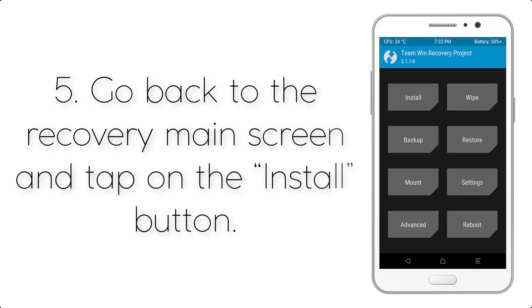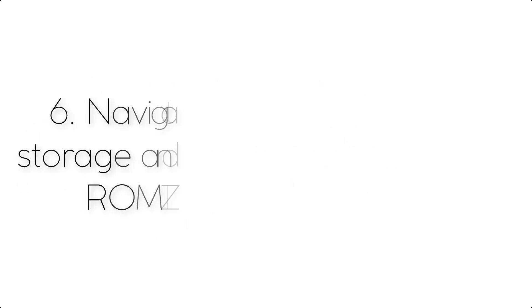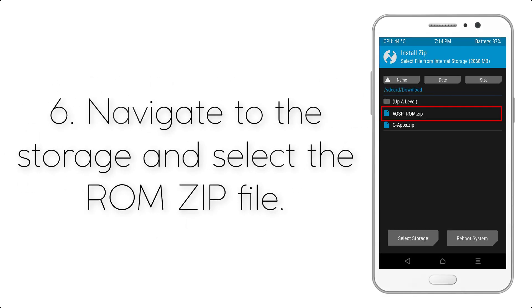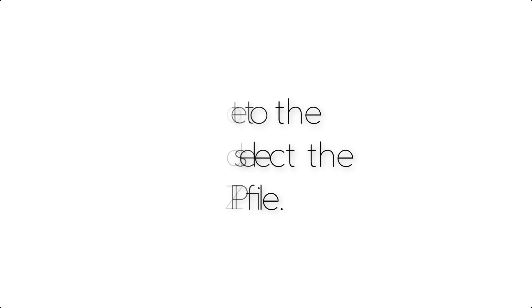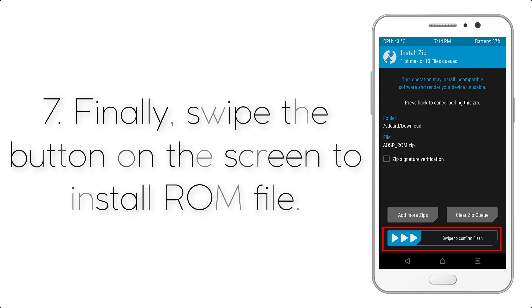Step 4: Swipe the button to wipe the device. Step 5: Go back to the recovery main screen and tap on the Install button. Step 6: Navigate to the storage and select the ROM zip file.